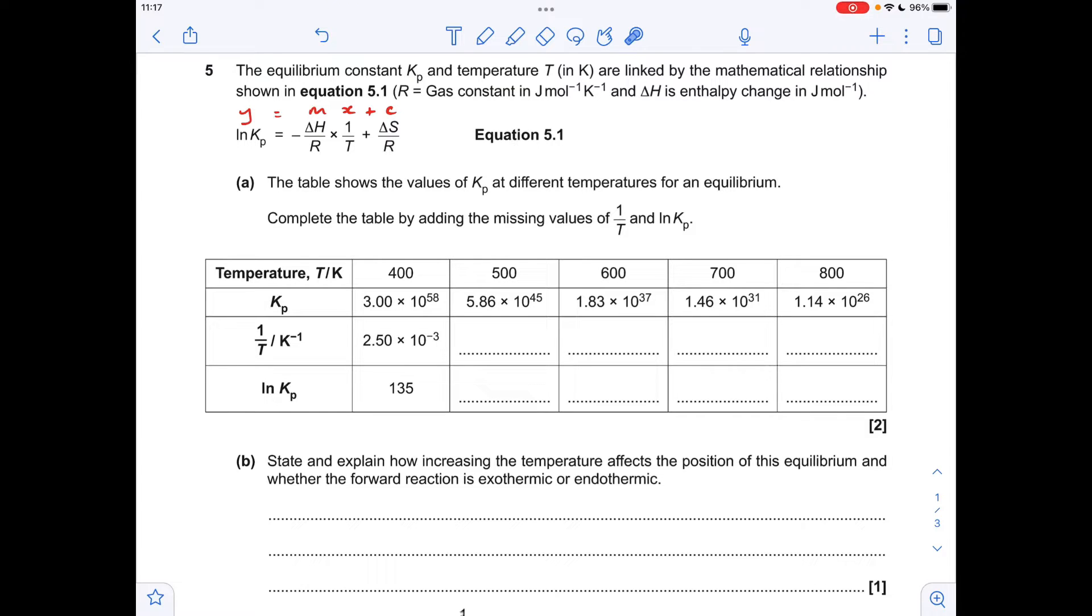Part A is straightforward. All we've got to do is calculate the 1 over T values for 500, 600, 700 and 800 Kelvin. And we've got to find the ln of these Kps here for those four temperatures. So there's the numbers there. I've just mirrored the number of significant figures for the 1 over T values. So you can see we've got three significant figures there, so I've just mirrored that there. The ln of Kp was quoted to the nearest whole number, so I've just matched that with the other ones.